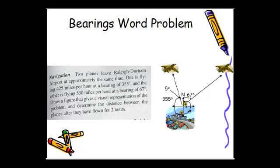Now we can see that we have two angles here that are adjacent, so we can add those together and have 72 degrees. Also, I completed the triangle here showing that we want to find the distance between the two planes.